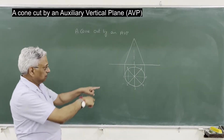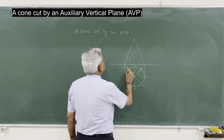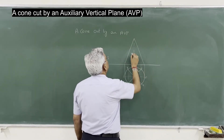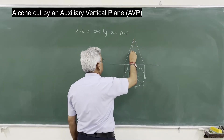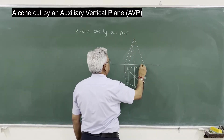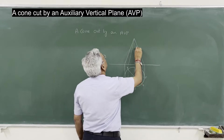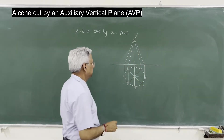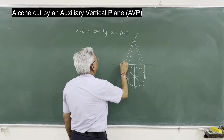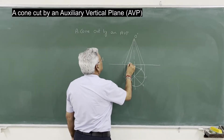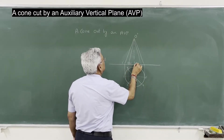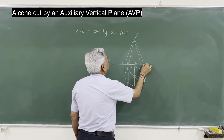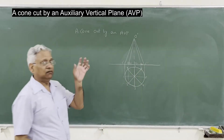Each of these can be projected in the elevation so that you get the slant edges. This is the vertex. So here we have 1-dash, 2-dash, 8-dash, 3-dash, 7-dash, 4-dash, 6-dash, and 5-dash. That is the allocation.